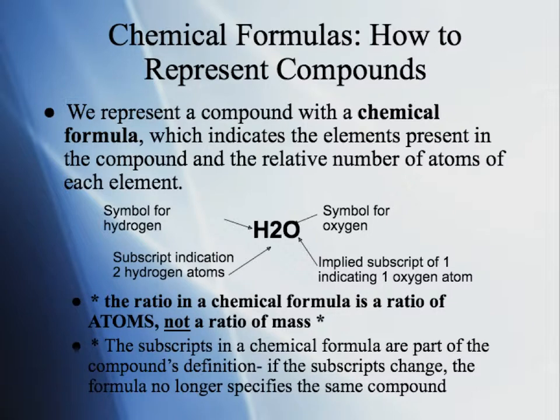Now let's look at chemical formulas. A chemical formula indicates the elements present in a compound and the relative number of atoms of each element. It basically shows the law of constant composition within it.